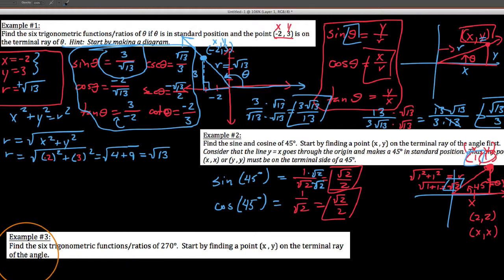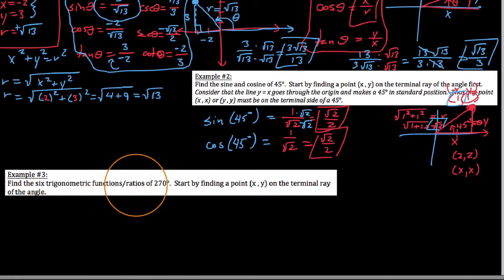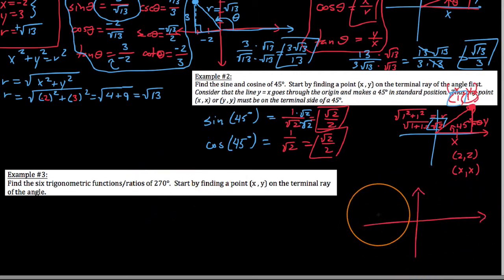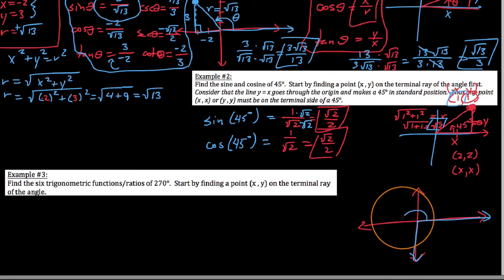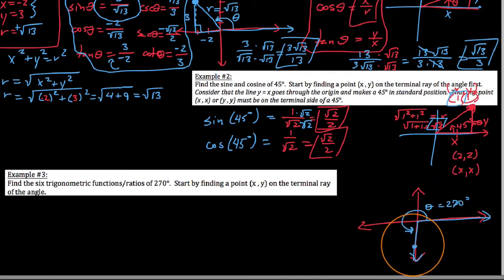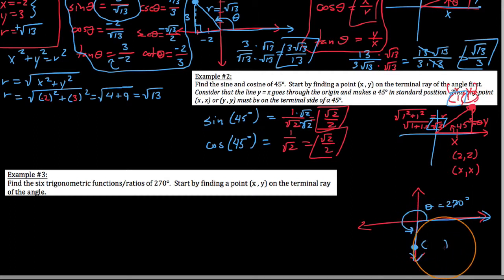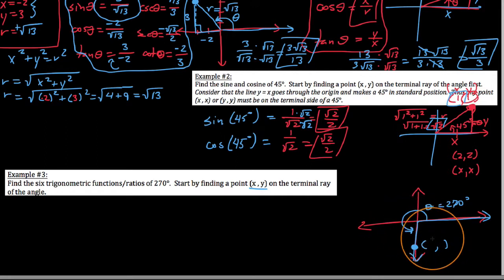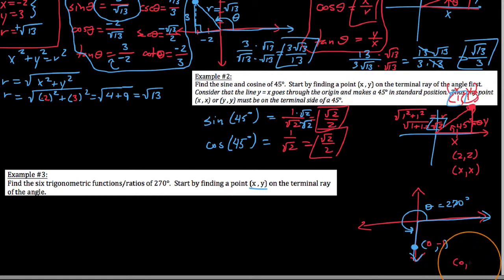Last but not least, speaking of finding a point on the terminal side: what happens when somebody wants you to find the six trig functions of 270 degrees? In standard position, we would leave the positive x-axis, and 270 degrees would be here — pointing straight down. This is some angle theta equal to 270 degrees. I can't even make a triangle, but I can tell you some point on the terminal side. What would be some point that lies on this side? The easiest one I can think of is 0 for x and negative 1 for y. I could use 0, negative 2 or 0, negative 3 — the whole point is I have a point on the terminal side.